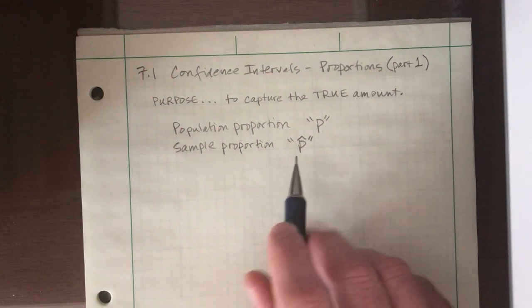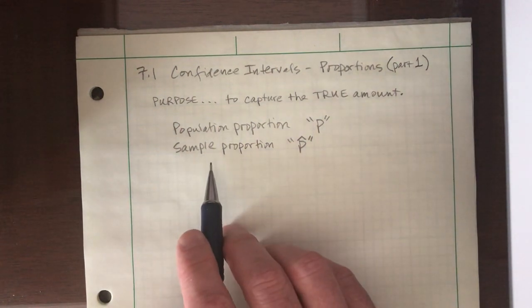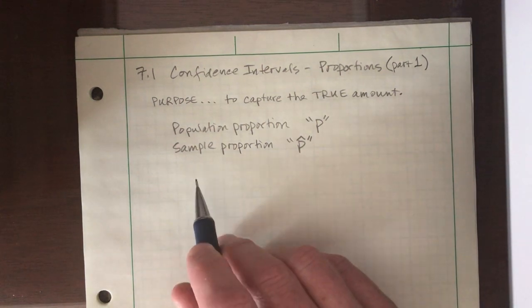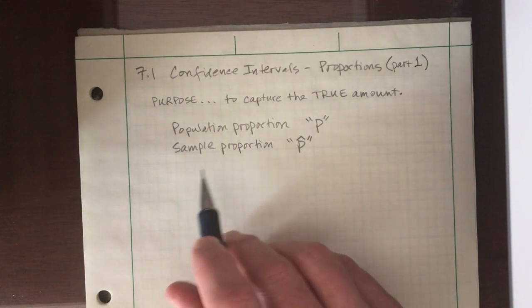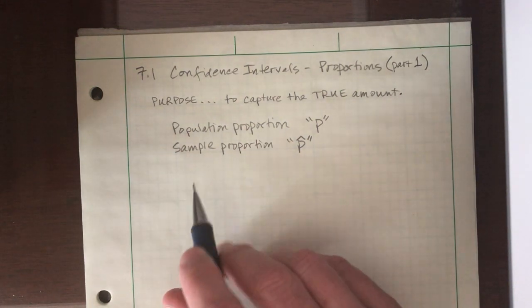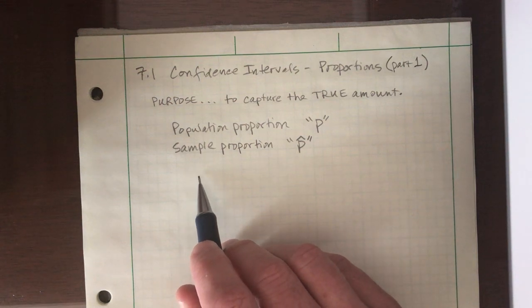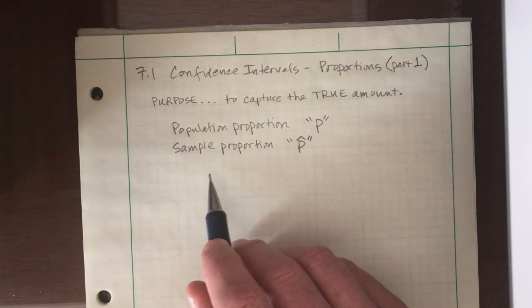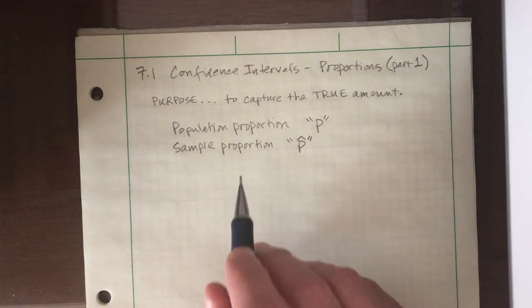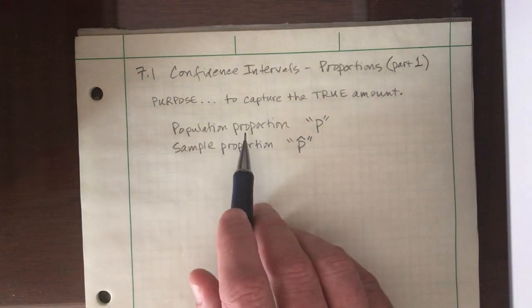So what is it we're interested in? Let's say I want to know what proportion of all Butte College students will eat ice cream this weekend. That's the true proportion, the population proportion. Or what percentage of adult Americans will be infected with the coronavirus. So proportions, percentages, that's what we're after.